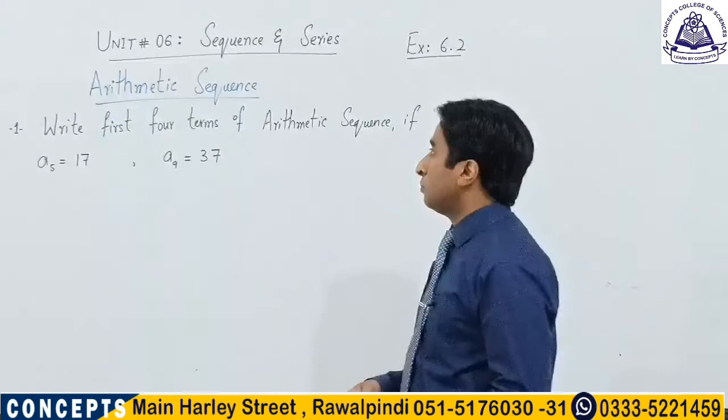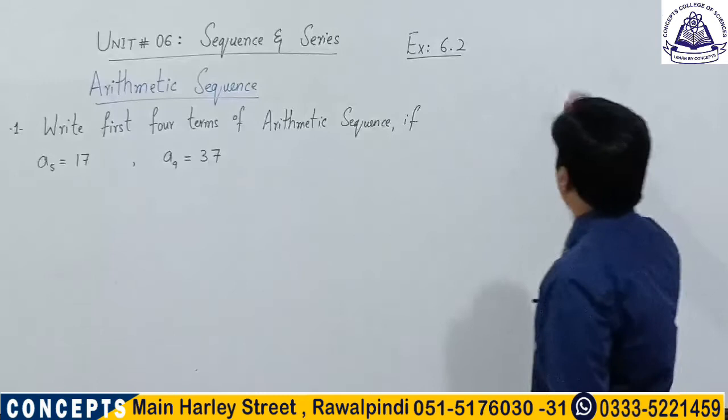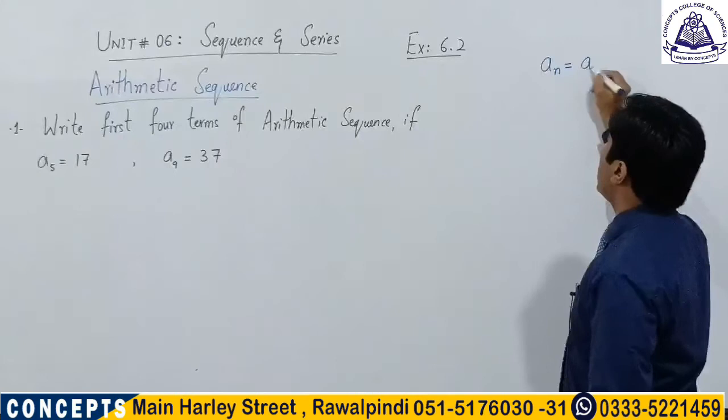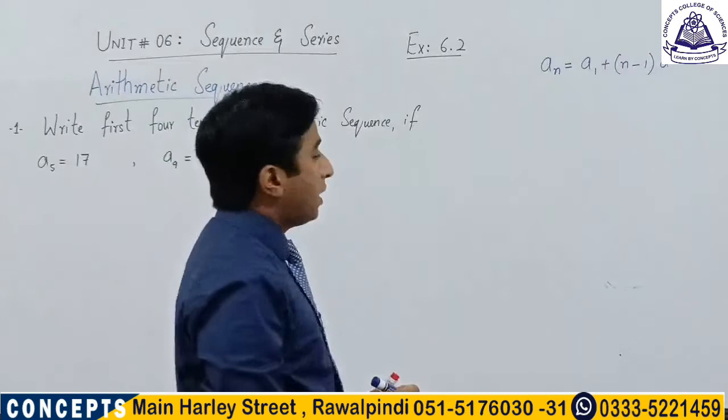Write the first four terms of an arithmetic sequence if its fifth term is 17 and its ninth term is 37. To find the general term of an arithmetic sequence we use the formula: a_n = a1 + (n − 1)·d, where d is the common difference between two consecutive terms of the arithmetic sequence and n is the number of the term.